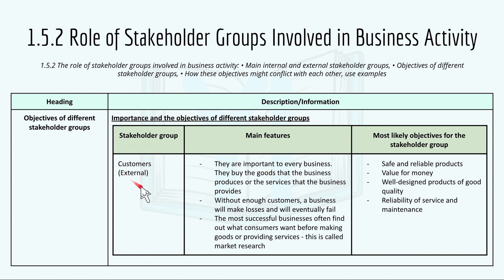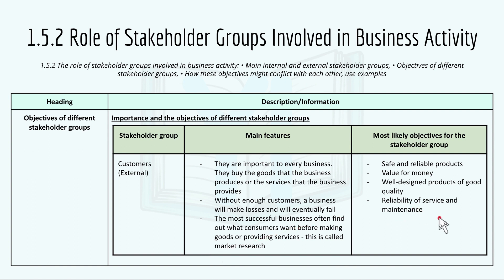Customers are an external stakeholder group. They are important to every business — they buy the goods the business produces or the services it provides. Without enough customers, a business will make losses and eventually fail. The most successful businesses often find out what customers want before making goods or providing services; this is called market research or being market oriented. Their most likely objectives are safe and reliable products, value for money, well-designed goods, good quality goods, and reliability of service and maintenance.